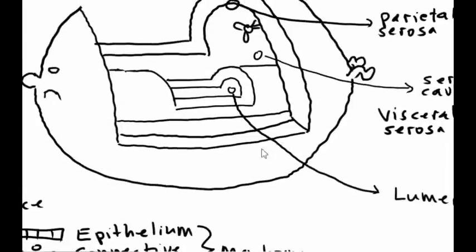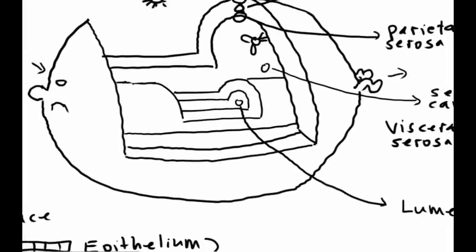And what's very distinctive about this space is that it's, of course, continuous with the outside world. Food goes in the mouth, goes through the stomach and so forth and out the anus. So there's a continuous connection between that space and the outside world. And to highlight that difference, I want to color in this space as green.